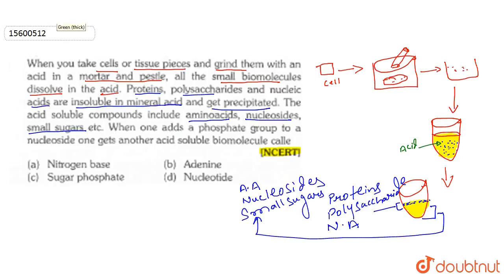Now let's see the question. The question asks: when one adds a phosphate group to a nucleoside, one gets another acid soluble molecule. Let's write nucleoside. So what will the answer be? We need to find where nucleoside is.